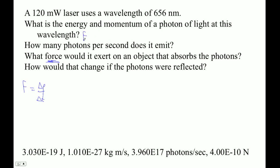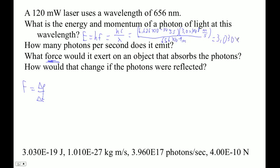The energy is easy — energy is hc over lambda. So it's hf = hc/λ. That's 6.626×10⁻³⁴ joule-seconds times 3.00×10⁸ meters per second — that's the speed of light — divided by the wavelength here of 656 nanometers, which is 656×10⁻⁹ meters. So: 6.626e-34 × 3e8 ÷ 656e-9. The energy is 3.030×10⁻¹⁹ joules.